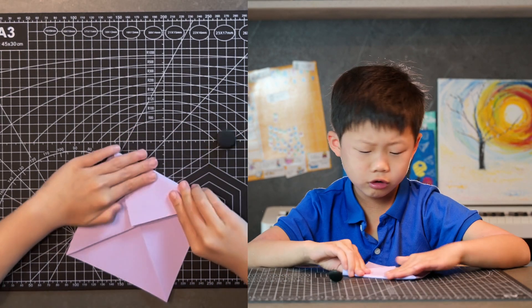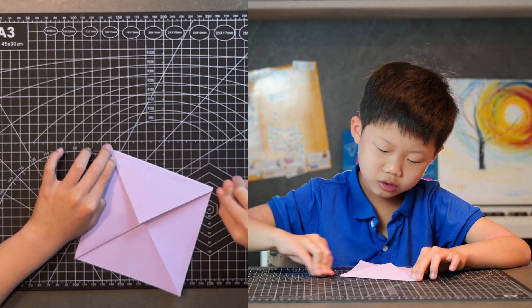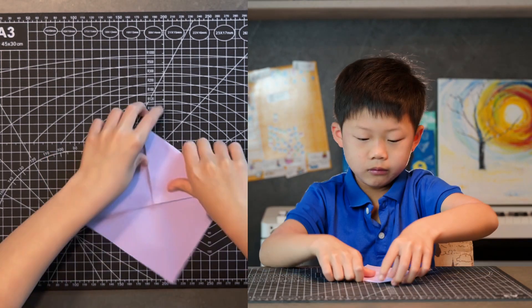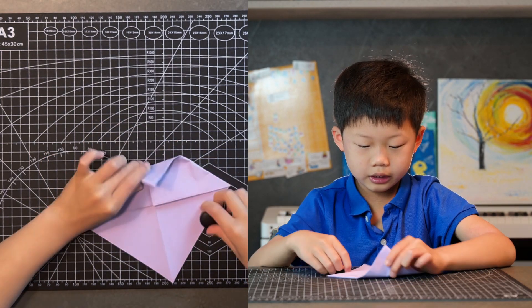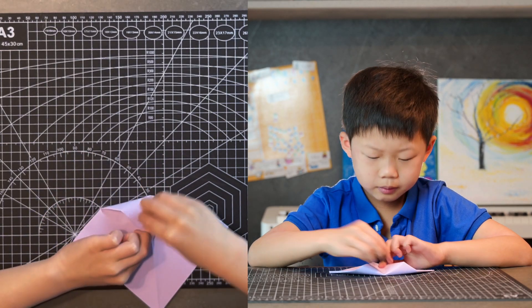Do the same thing on your other side. And then fold your top edge into your center point. Adjust the crease.